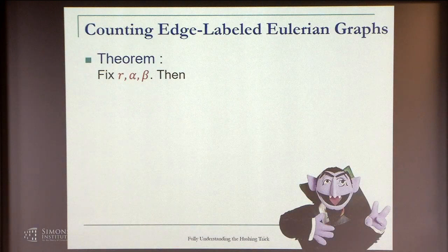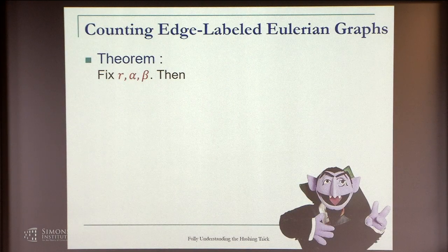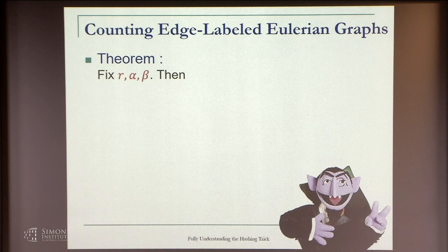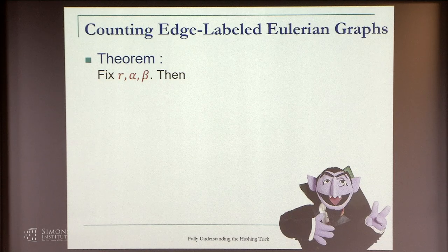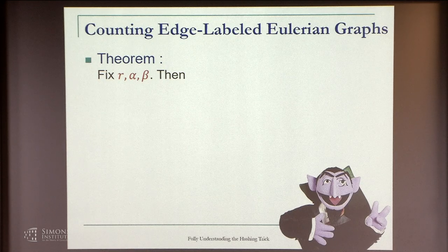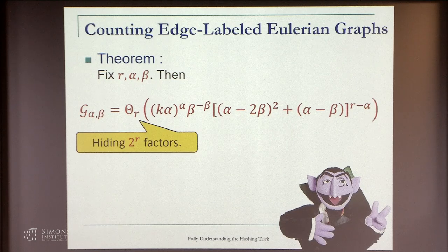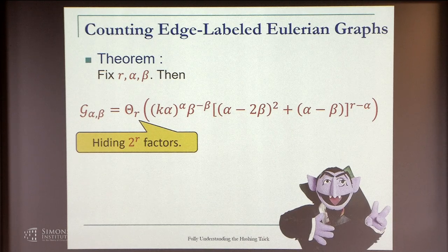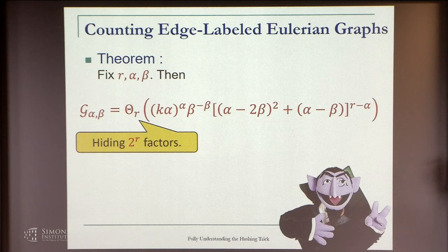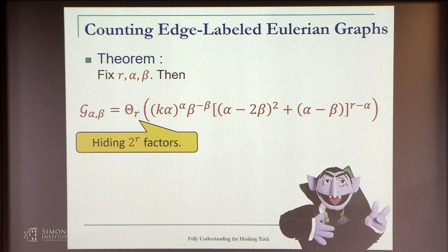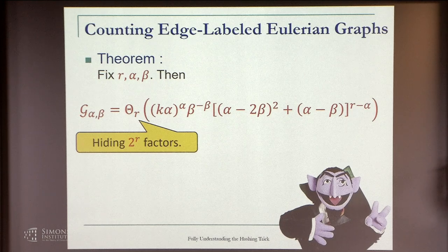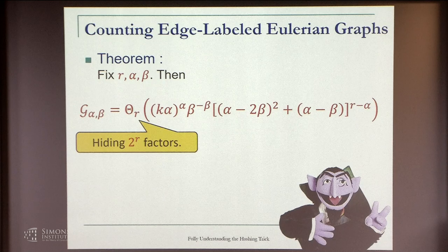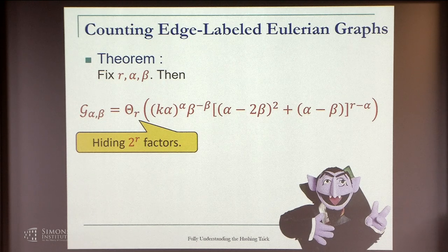They have r labeled edges. They are Eulerian, meaning every connected component is Eulerian. They have alpha non-isolated vertices and beta non-degenerate connected components. The hard part is to count how many such graphs are there. I think Dracula was mentioned before today. The theorem we have: we have tight bounds up to 2^r factors of the number of such graphs. If we fix r, alpha, and beta, g_{alpha,beta} is up to 2^r factors, this expression.